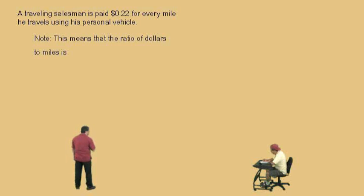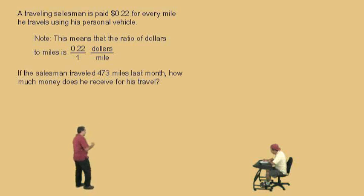So, this means that the ratio, Charlie, of dollars to miles is .22 to 1. Remember, .22 dollars to 1 mile. And so, if the salesman traveled 473 miles last month, how much money does he receive for his travel?